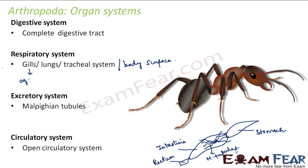Talking about the circulatory system, they have an open circulatory system. What is an open circulatory system? There are no blood vessels — that means all the internal organs are directly bathed in blood. Blood is present inside the body everywhere; there is no system of blood vessels. So they have haemolymph, that is blood and lymph mixed together.